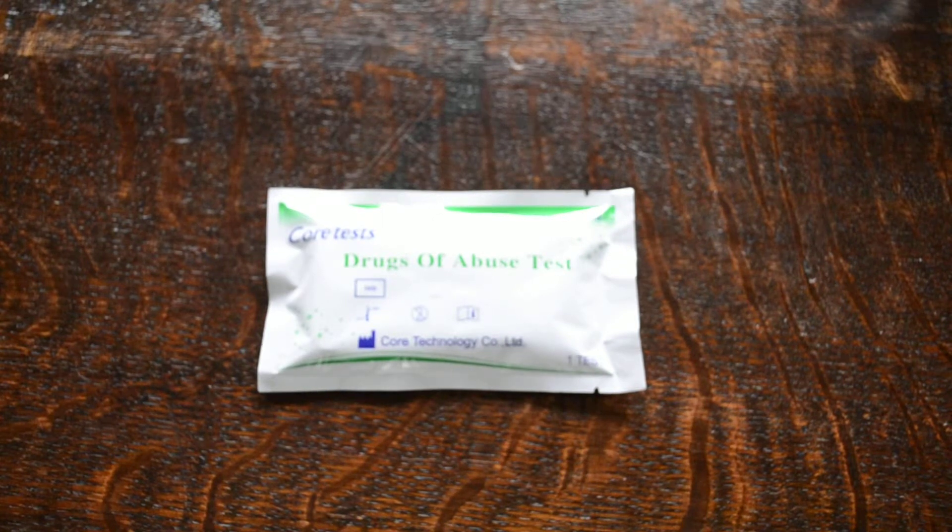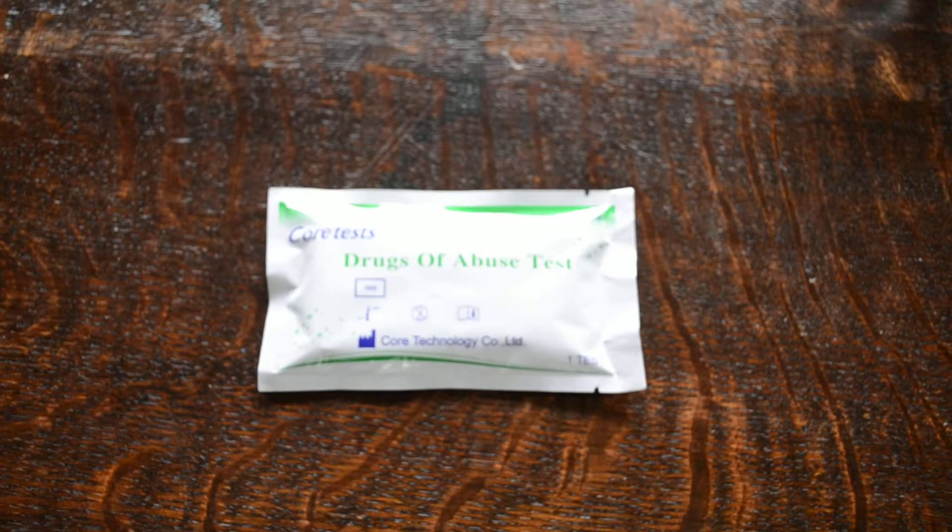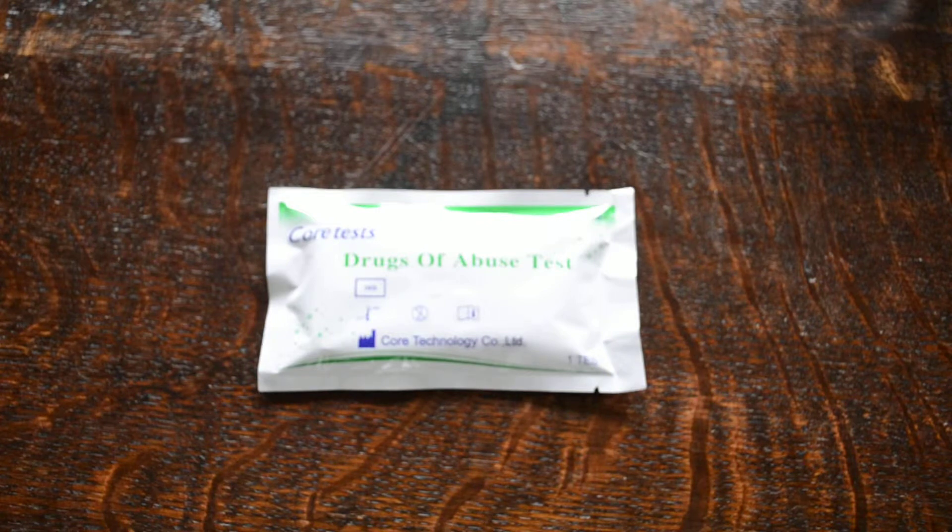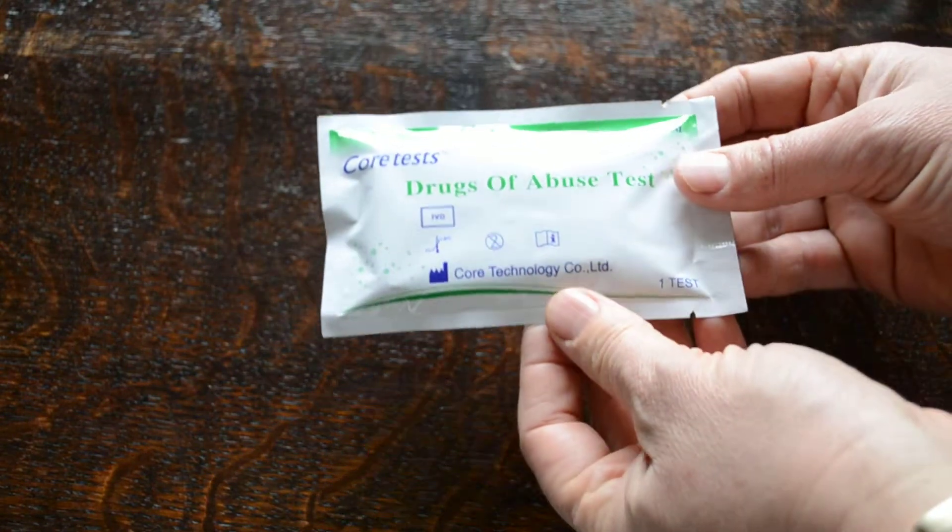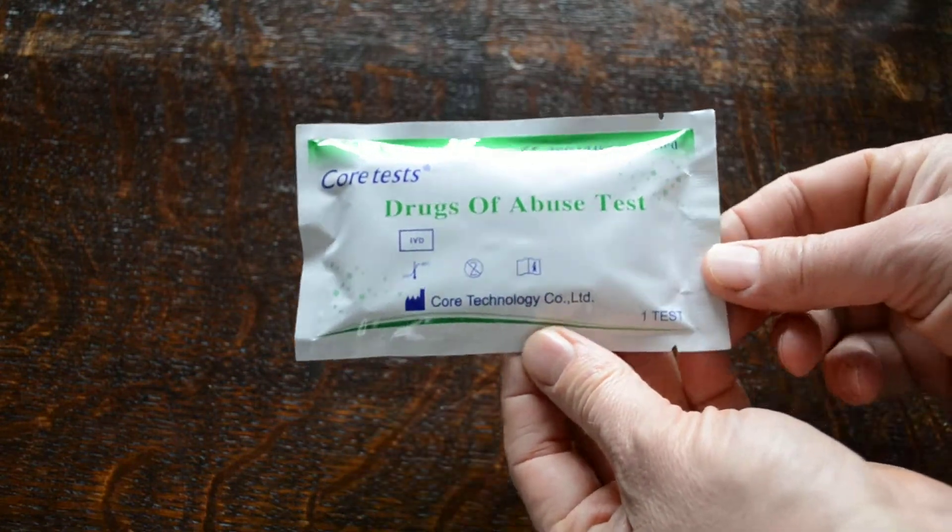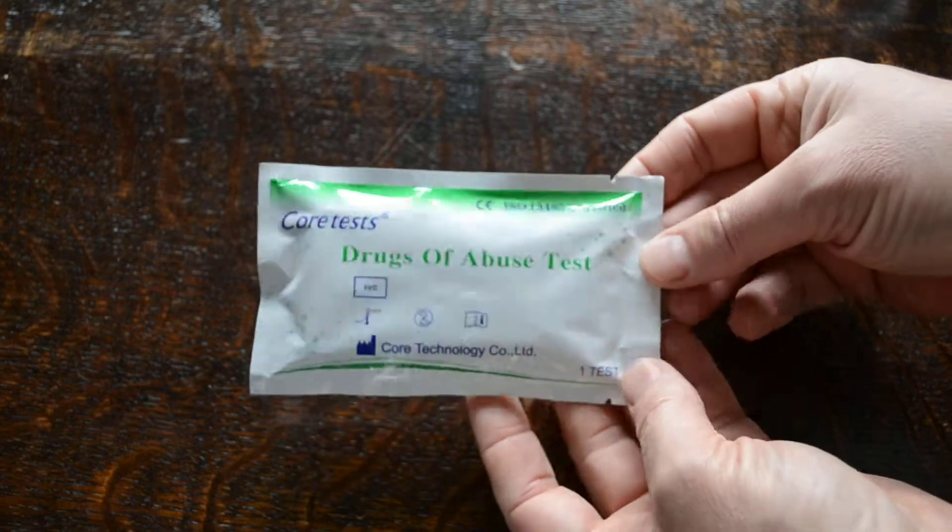Okay, we're going to demonstrate for you in this video how to do a seven-panel drug testing kit. This is the CoreTest Drugs of Abuse Pack. This is manufactured by Core Technology. It's an in vitro diagnostic device, which means it's a quality certified medical device for testing.